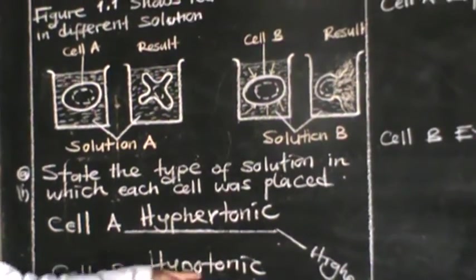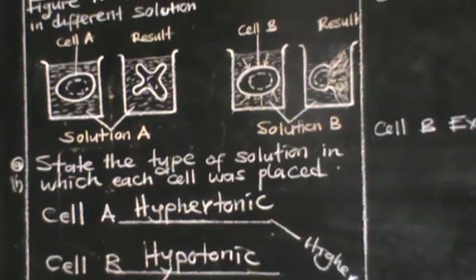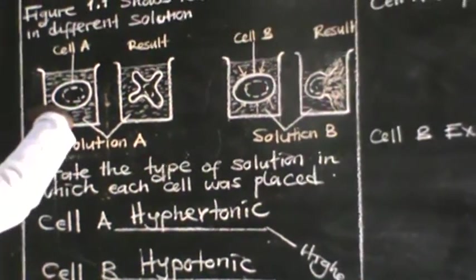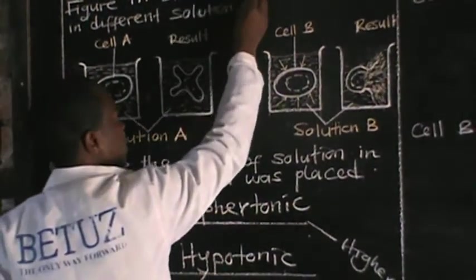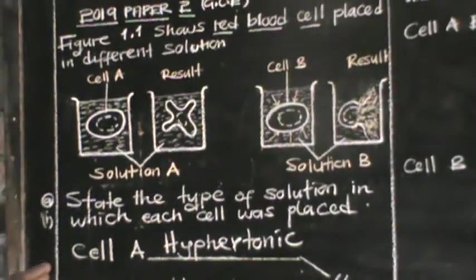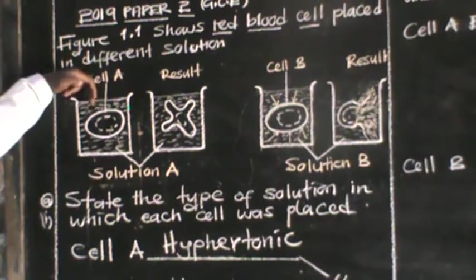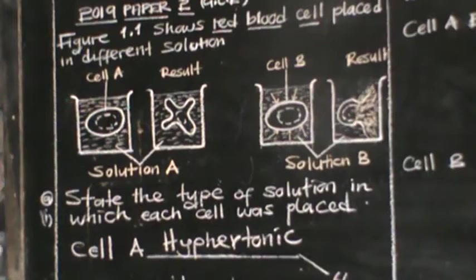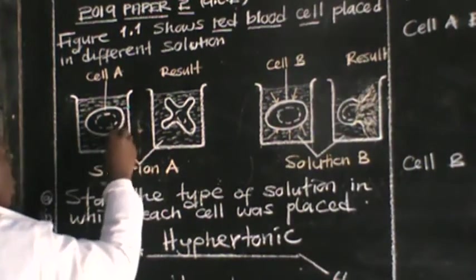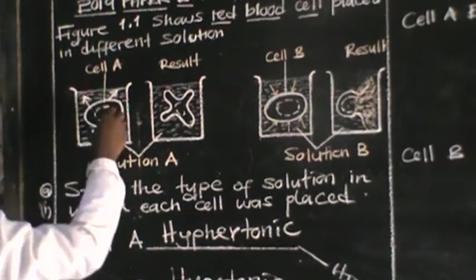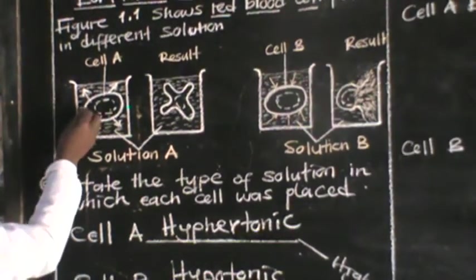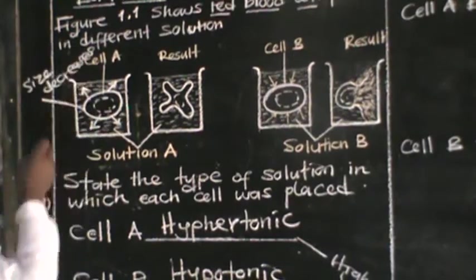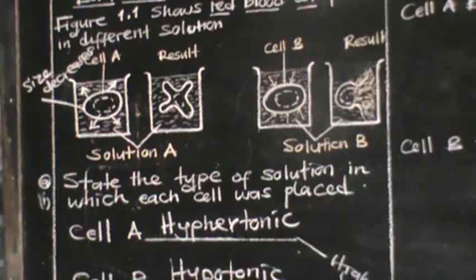In this case, we are talking about a red blood cell, which is an animal cell. If we place this animal cell — a red blood cell — into a hypertonic solution, what happens is that this animal cell is going to lose water by osmosis. As it loses water by osmosis, its size decreases and it becomes smaller.